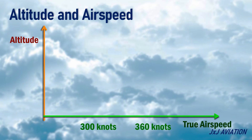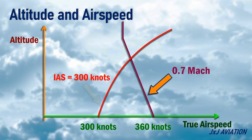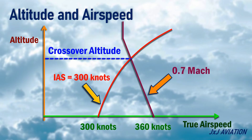The point where the Mach 0.7 curve and the indicated airspeed 300 knots curve intersect is called the crossover altitude. Above this altitude, Mach number is used as the aircraft's speed reference.